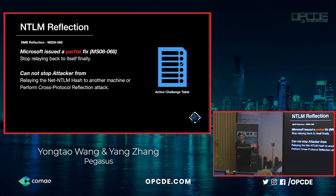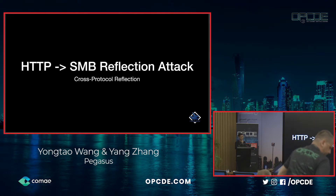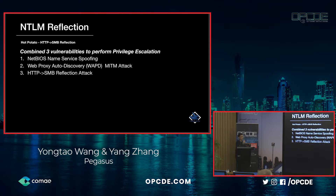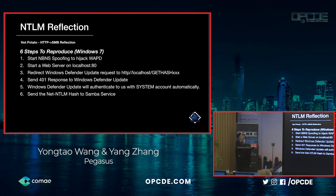We can perform cross-protocol attacks, such as HTTP-to-SMB relay attack. When talking about HTTP-to-SMB relay attack, we have to mention Hot Potato, which combines three vulnerabilities to perform local privilege escalation — one for HTTP-to-SMB relay attack, and another for WPAD man-in-the-middle attack. Hot Potato's attack method is elegant, using six steps. We'll use some flowcharts to explain the main attack process.